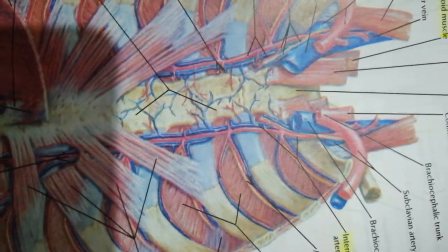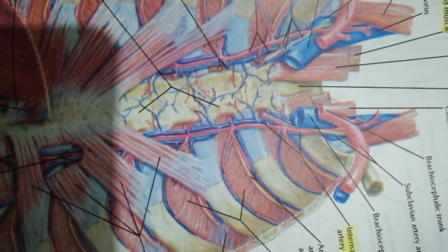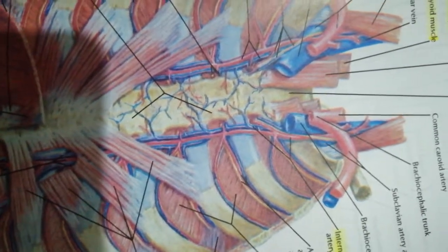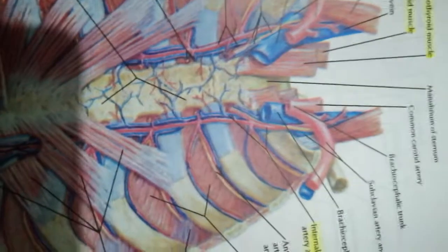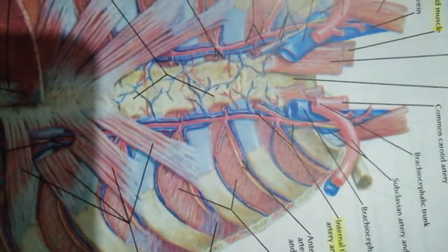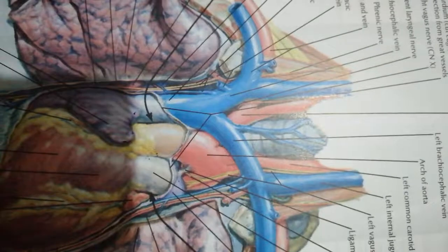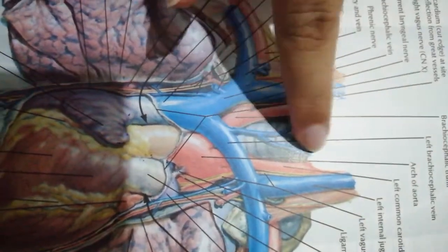We also have the posterior first posterior intercostal vein, which basically drains into the brachiocephalic, which is why it projects into the root of the neck. We also have the inferior thyroid veins, which can be shown in this diagram over here.